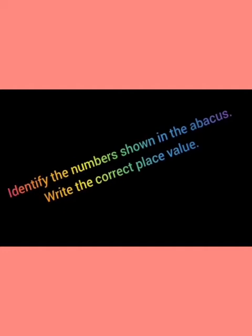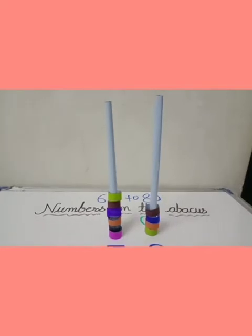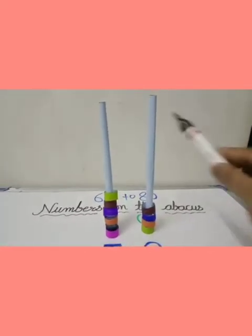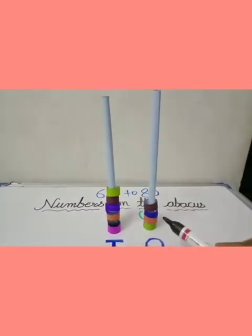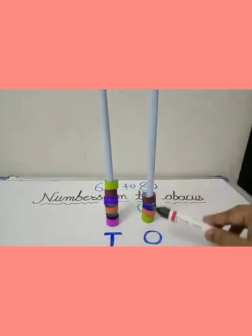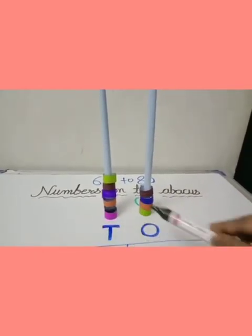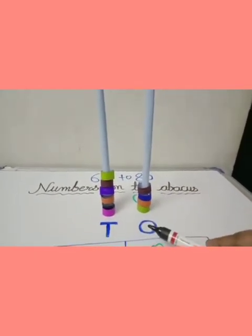Now, let's learn about how to identify the numbers shown in the abacus tool and write the correct place value. Look at this abacus tool. Here are some rings on the tens place and also the ones place.